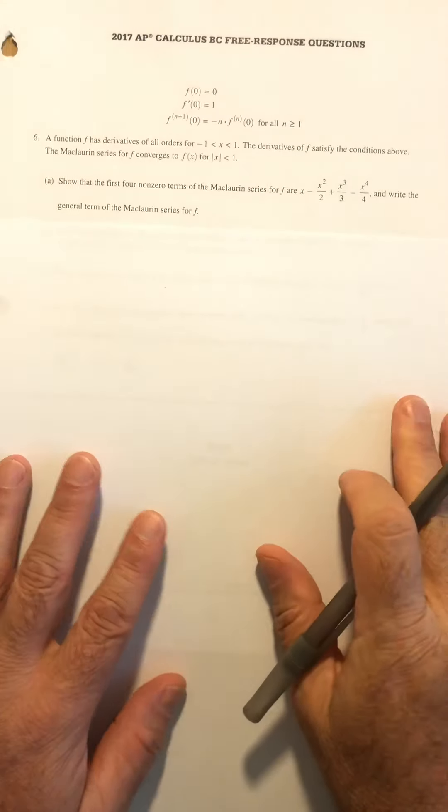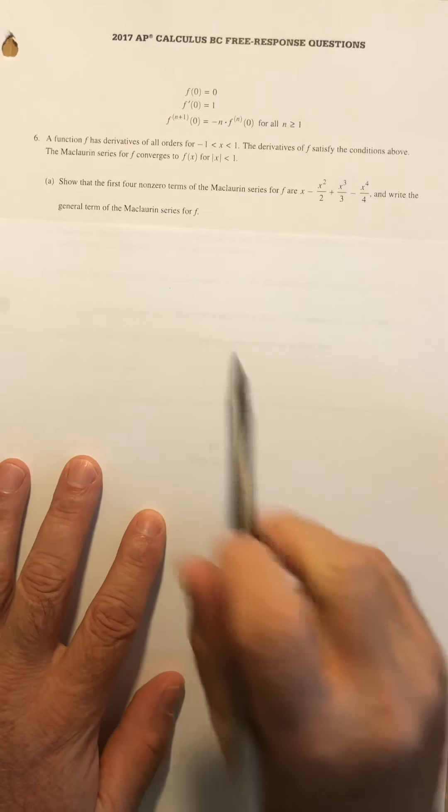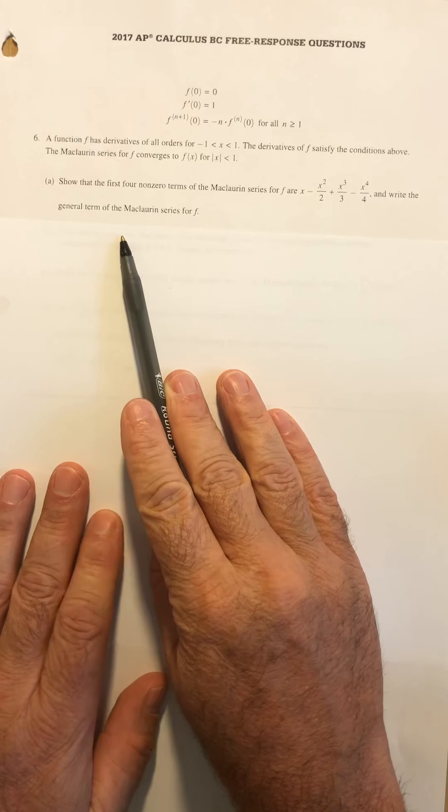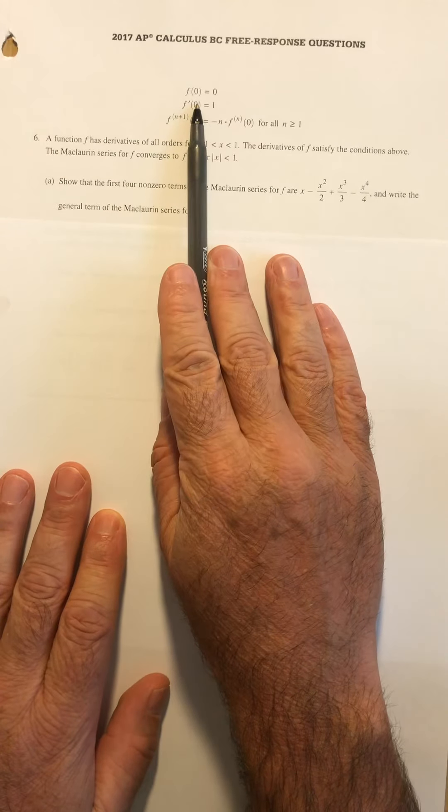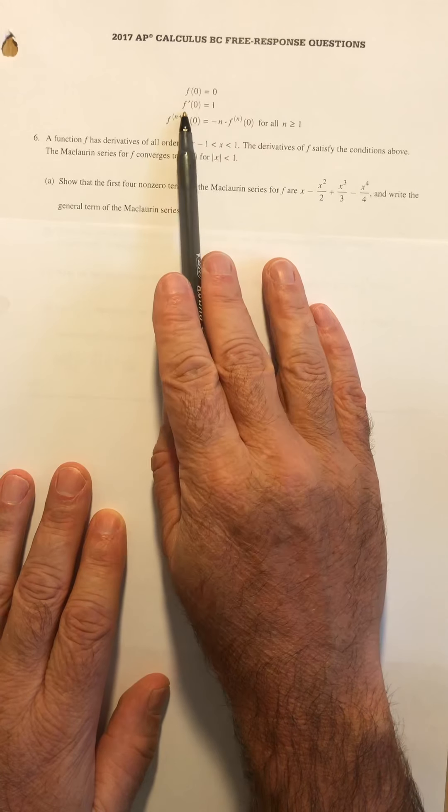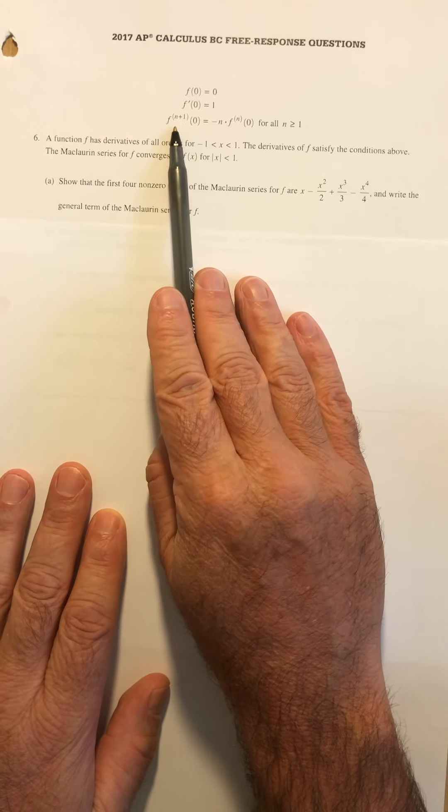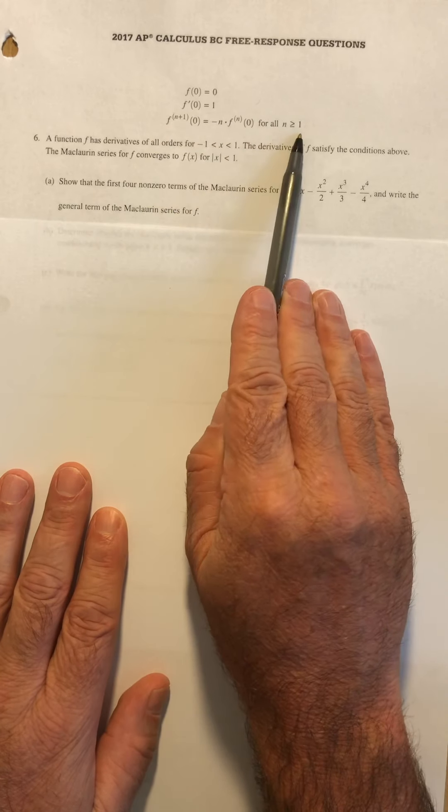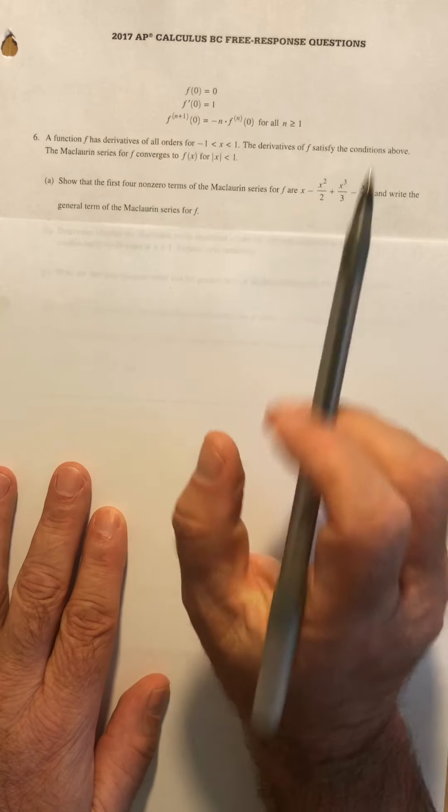Alright, number six is another Maclaurin series polynomial. They're actually giving you the answer here, but they're asking you to derive it as well. So we have a function, we know its value at zero, its derivative at zero, and then a formula for any order derivative greater than one. So second derivative, third derivative, fourth derivative, etc.